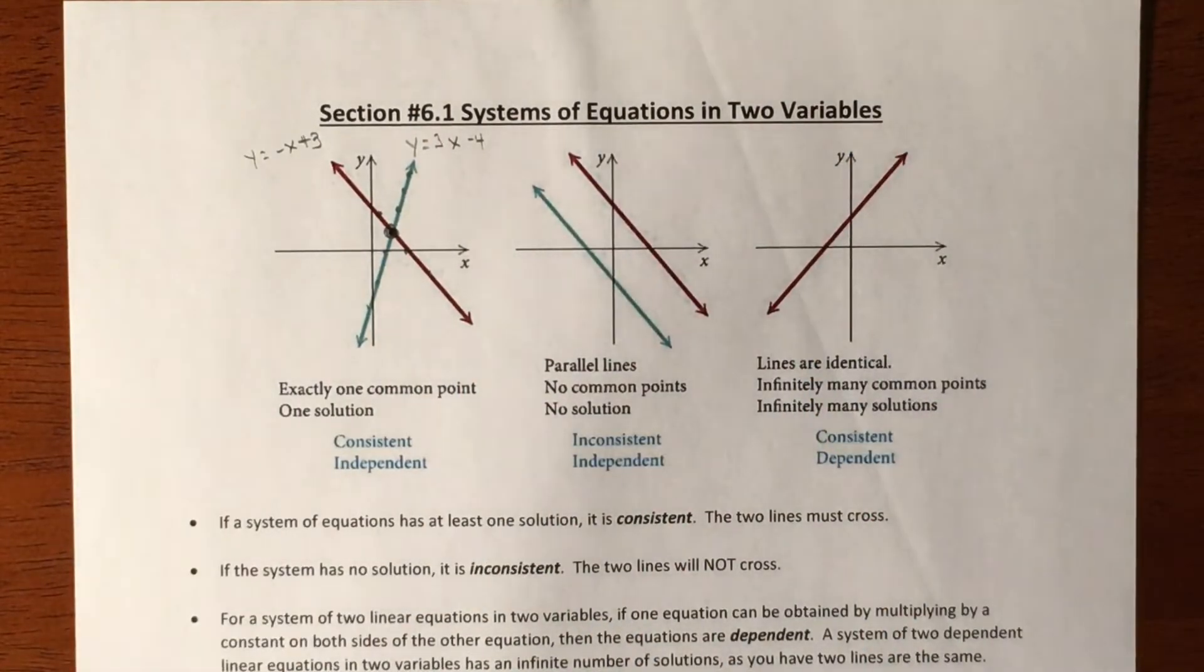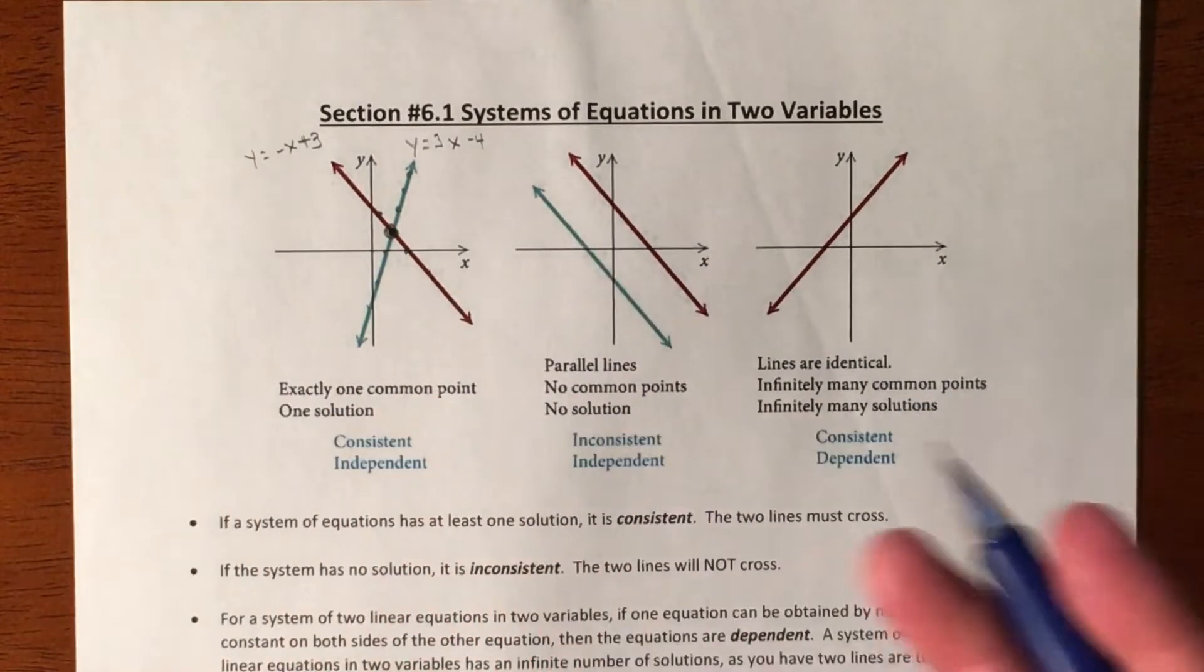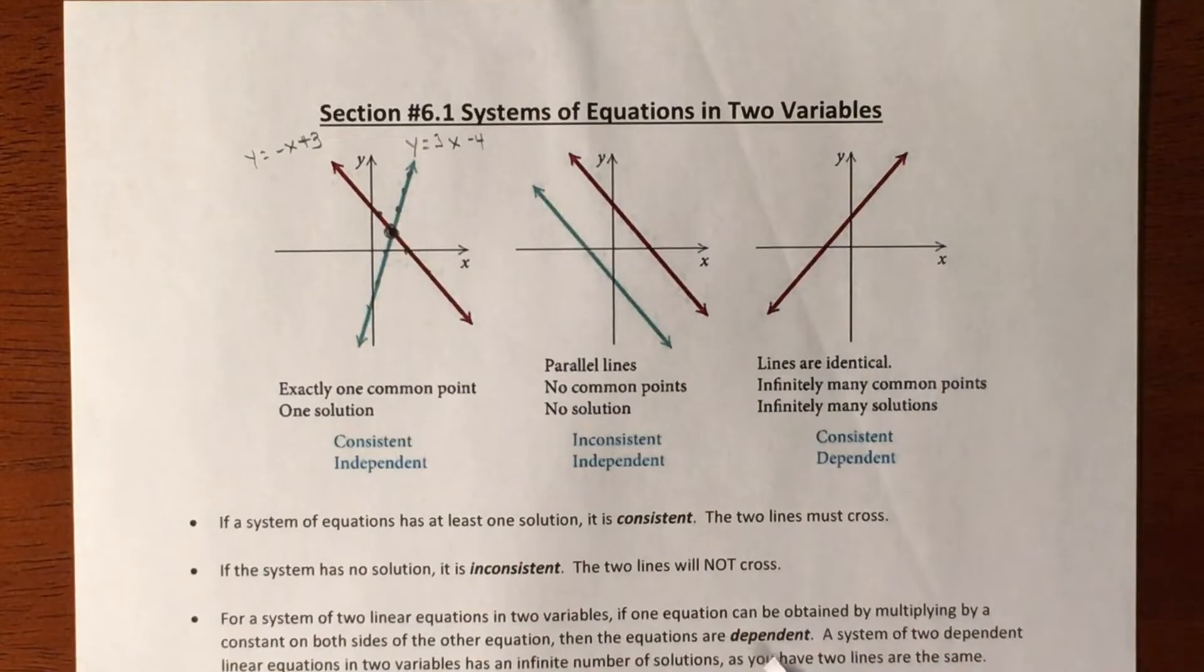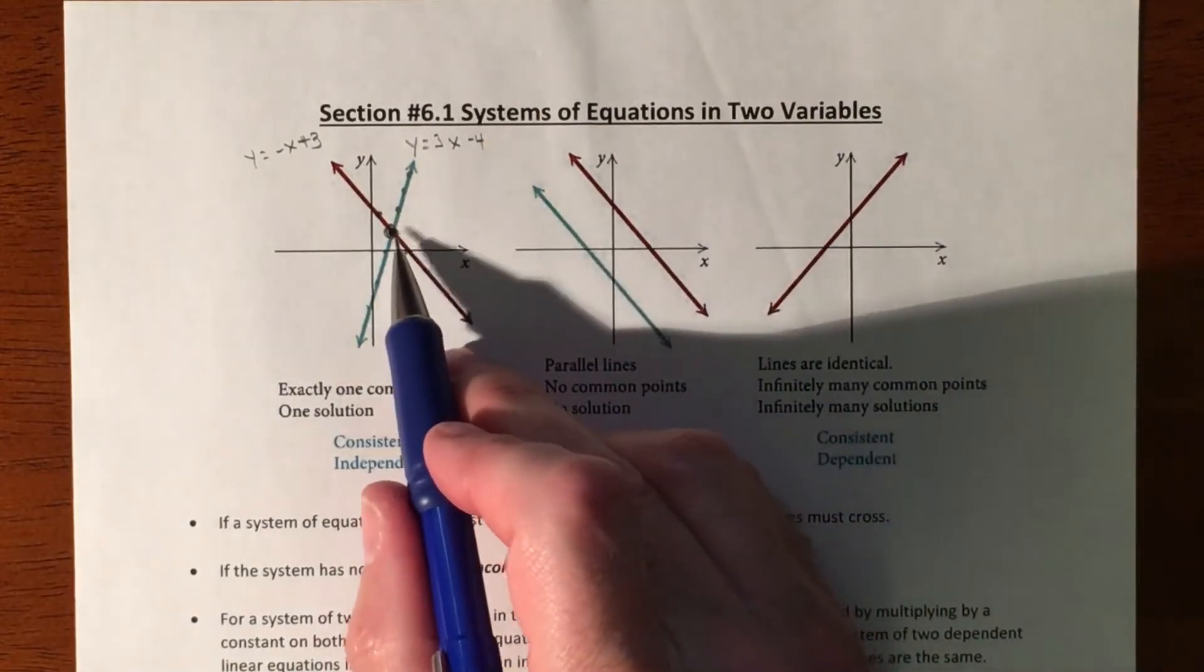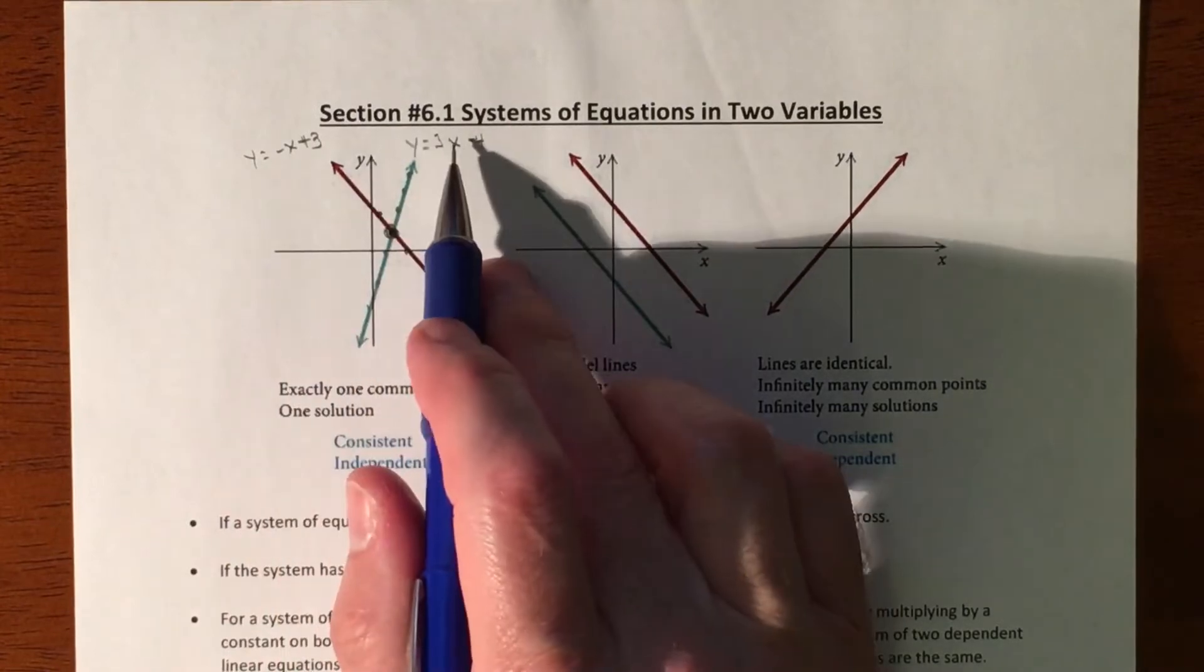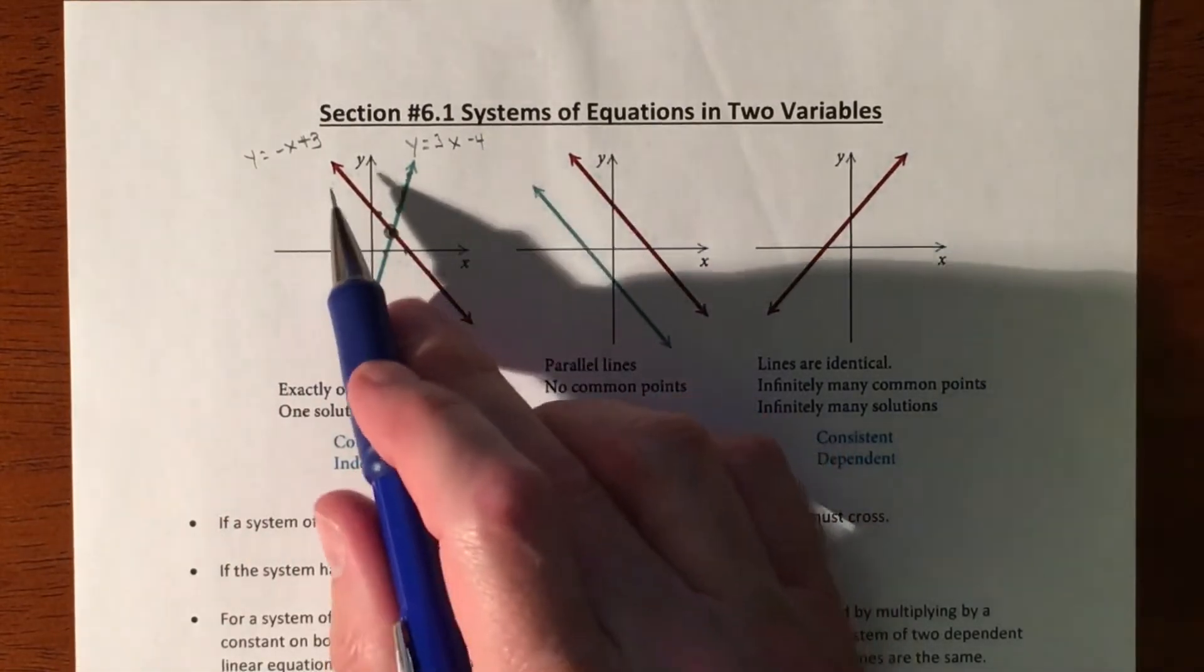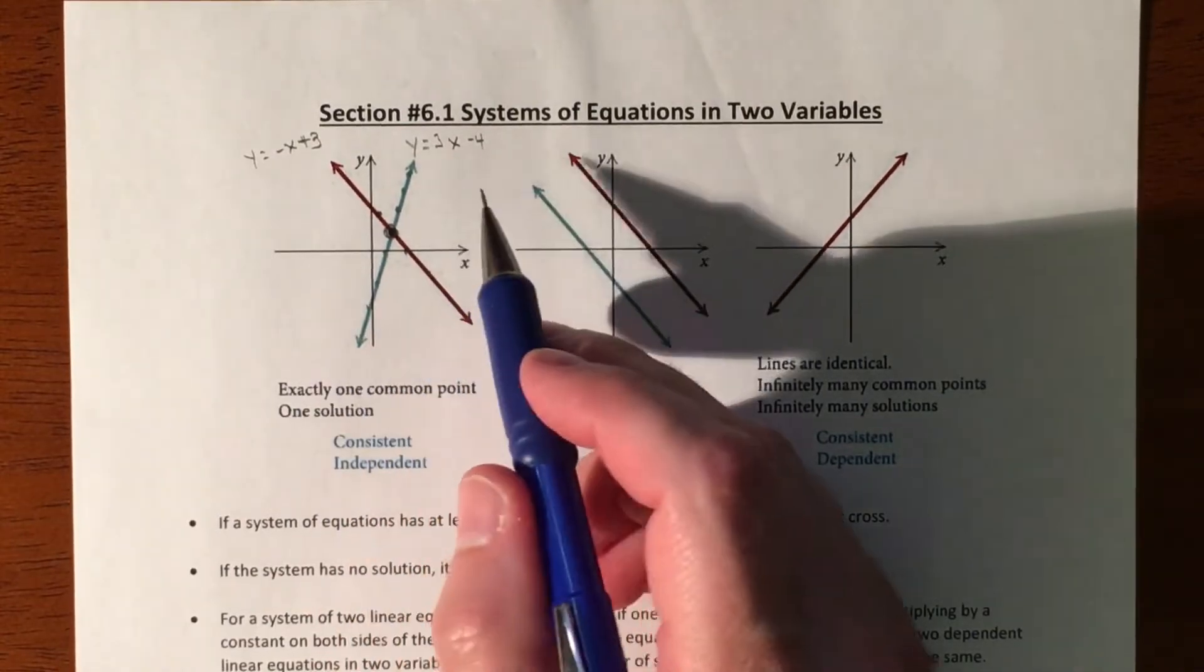But not all lines cross, not all graphs cross. At some point we're not just going to be graphing lines, you're going to be graphing all sorts of different things. You're still looking for that point that satisfies both equations. Depending upon the types of graphs, you may have more than one solution. For example, a parabola connecting with a line may give you two solutions.